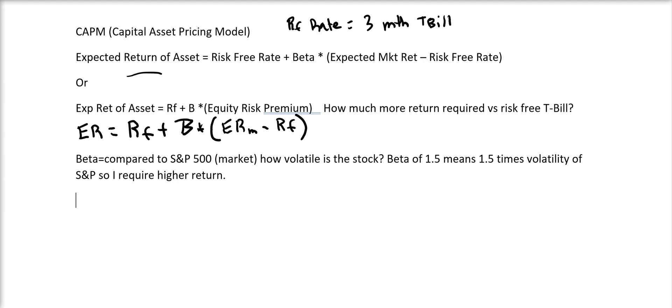So the way this formula is written, there's a couple different ways. If we look at the expected return, ER equals Rf plus beta, and I wrote in the times sign there, but normally it's just implied when you match it up against the parentheses. The expected return of the market minus the risk-free rate. Now, the beta, by the way, is compared to the S&P 500. We're comparing how much more volatile is the stock compared to the market. When we say the market, we mean the S&P 500. So a beta of 1.5 means one and a half times the volatility of the S&P.